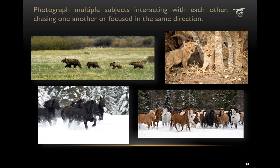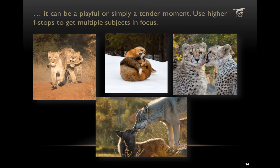When photographing more than one subject, look for opportunities where they're connecting. If they're not looking at each other, not moving in the same direction, it's almost better to isolate the focus on just one. But when they are moving together, looking at each other, interacting in some way, that's when you want to include more than one or all of them. In these cases, leverage higher F-stops — more like F9 or F11 — to put more of the subjects in sharp focus. It can be a playful moment or a tender moment when they're interacting.